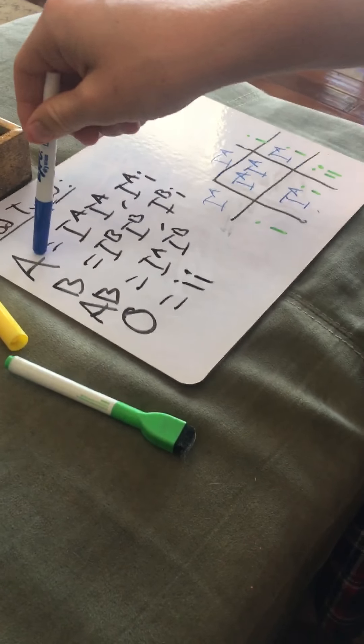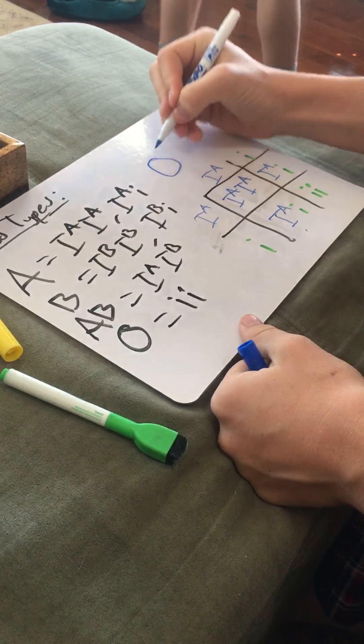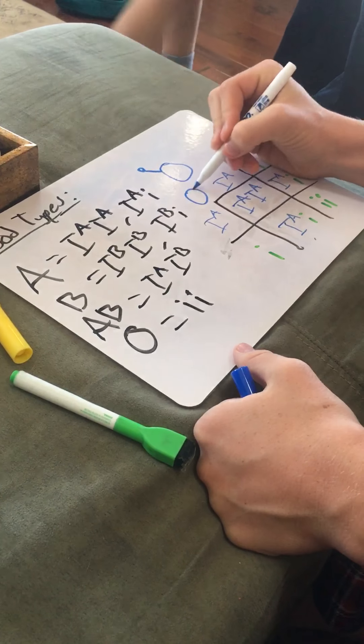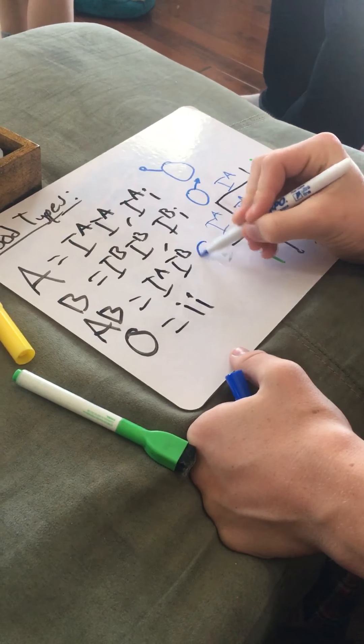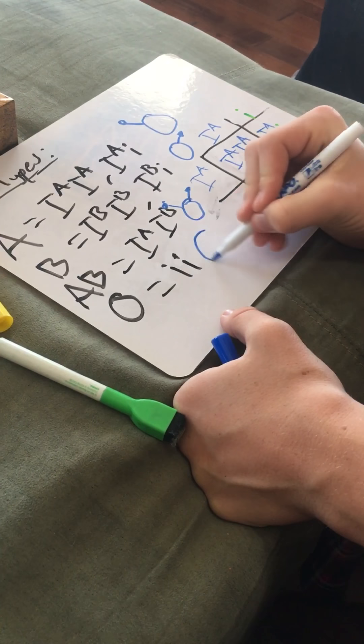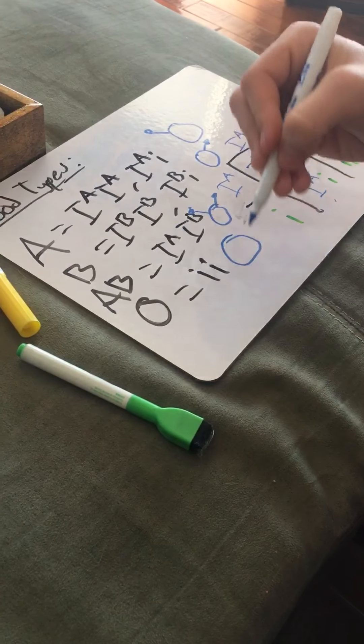So basically there's four main blood types. There's A, which means it has an A antigen like this. Watch. So it has this thing right here. Can you go get Kai? There's B, which means it has something like this. Because Kai's coming over. There's AB, which goes like this. And then there's O, which means there's nothing. Like O is a zero. Okay. So these are like how our blood cells are.